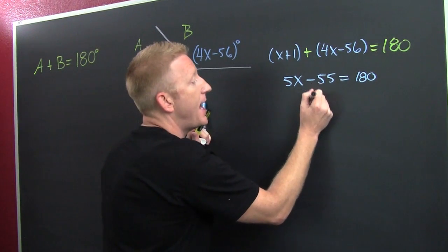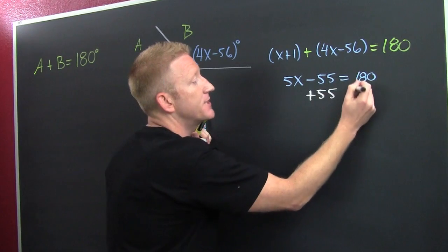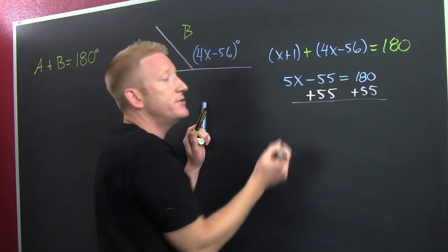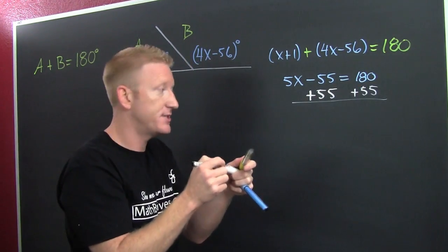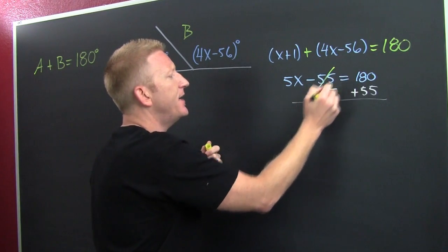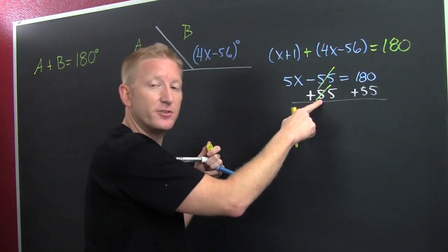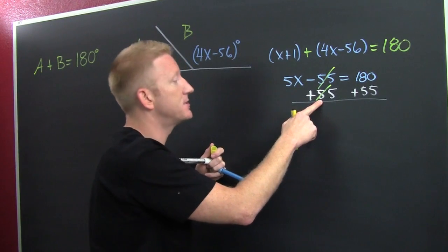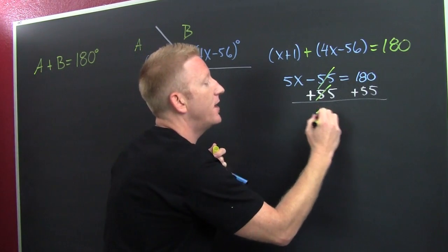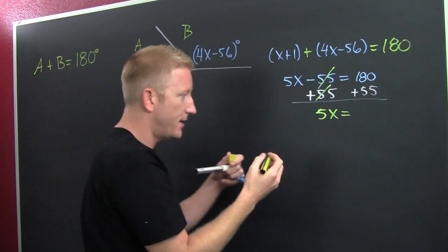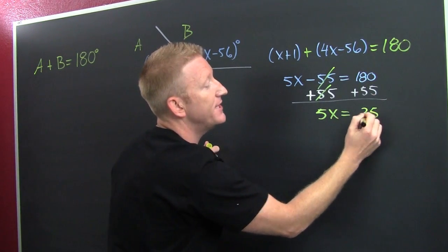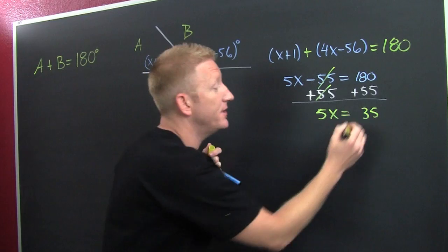Now we solve. First, get rid of that negative 55 — add 55 to both sides. What you do on one side you must also do on the other. Be careful when crossing out fives; they can look like eights. So I have 5x on the left, and on the right 55 plus 180.